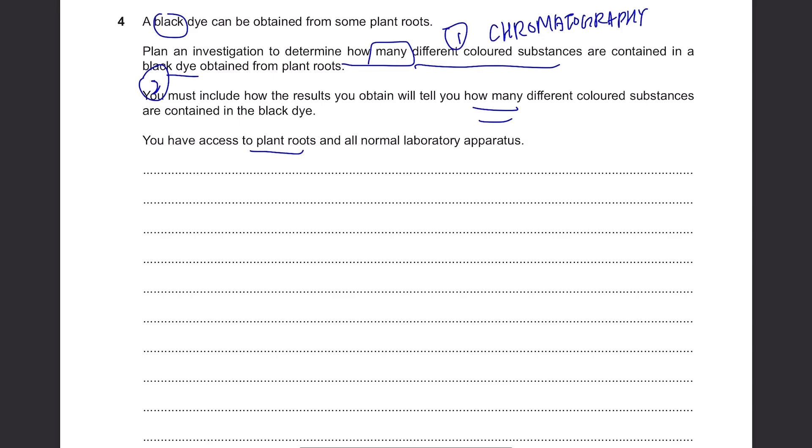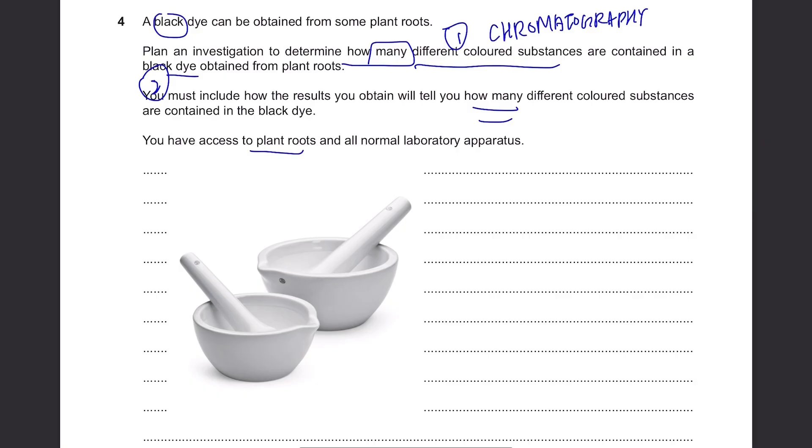So the way you do is, you have to crush this using pestle and mortar. These are the pestle and the mortar. I'm sure you guys have seen this in science labs. So you put your plant roots in this equipment, add some water, crush it, extract the liquid, then you drop the liquid on the chromatography paper, carry out chromatography. And now you explain how you're gonna do your chromatography.